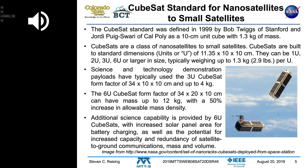A three U CubeSat is 34 by 10 by 10 centimeters — close to 14 by 4 by 4 inches — with up to four kilograms of mass. A six U CubeSat is just two three U's lined up lengthwise next to each other, making it 34 by 20 by 10 centimeters.